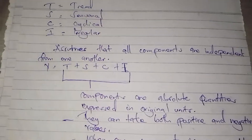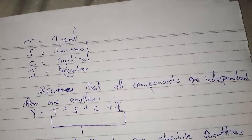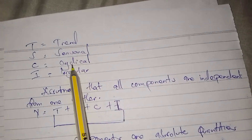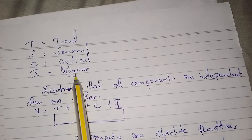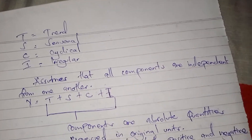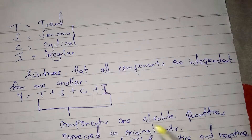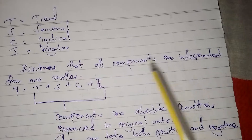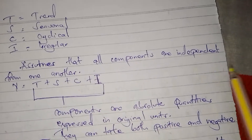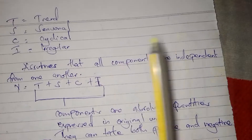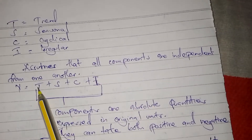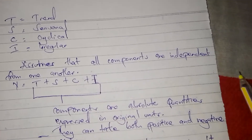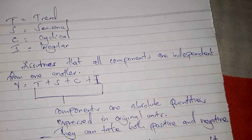T is trend, S is seasonal, C is cyclical, and I is irregular. The assumptions of the additive model: it assumes that all components are independent from one another — they do not affect each other. The cyclical does not affect trend, the seasonal does not affect irregular, and so on.